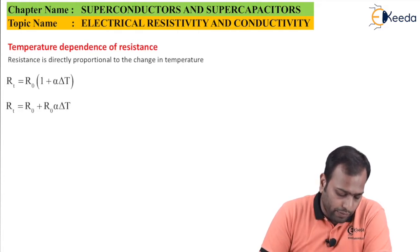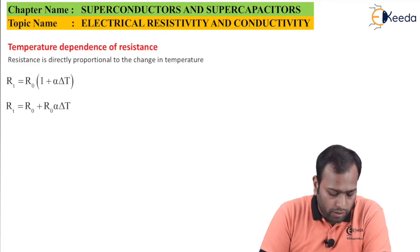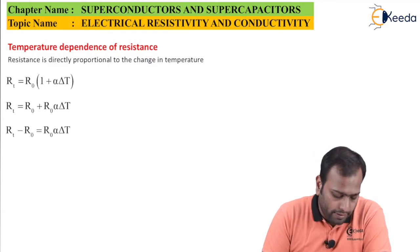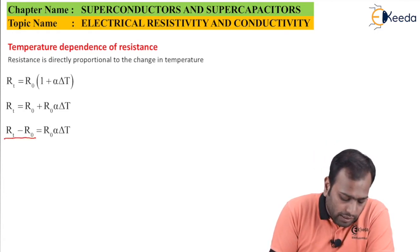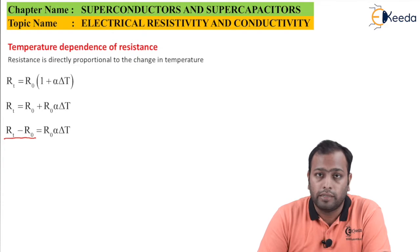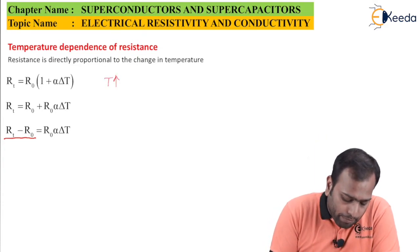We can rewrite this equation by expanding the bracket as RT equals R naught plus R naught alpha delta T. Taking R naught to the other side, it becomes RT minus R naught equals R naught alpha delta T. RT minus R naught is the difference in resistance. Always make note that as temperature increases, resistance increases.